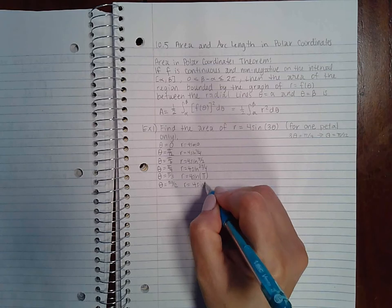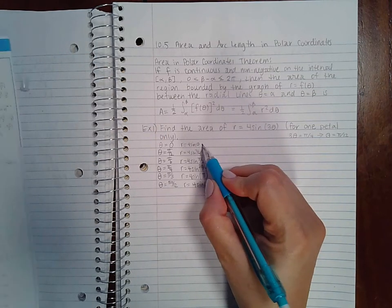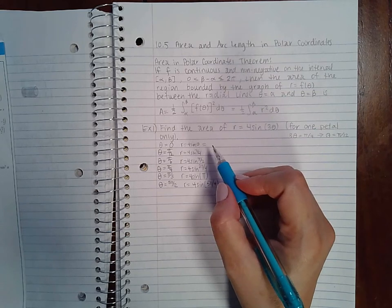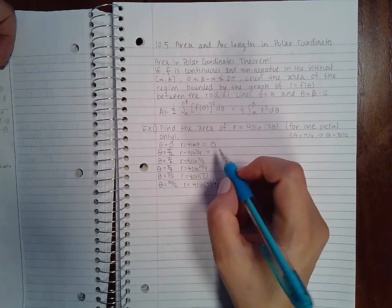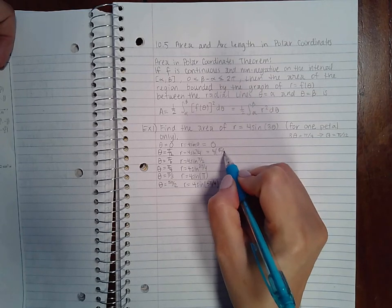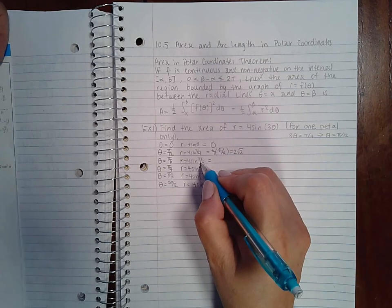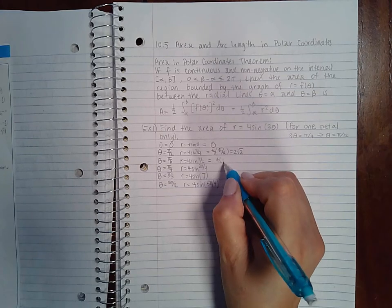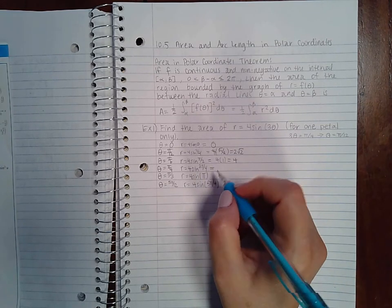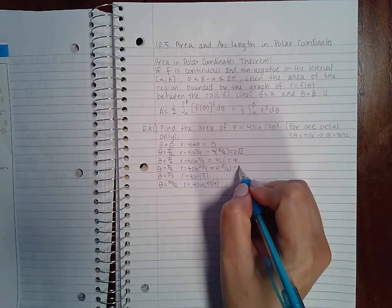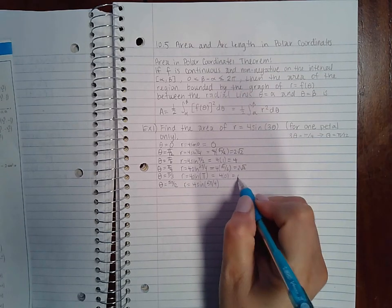That would be 5π/4. So sin(0) is 0, so this is going to be zero. Then sin(π/4) is √2/2, but this 2 will reduce with this leaving me with just 2√2. Sin(π/2) is going to be 1, so I get 4. Sin(3π/2) is going to be √2/2, and sin(π) is going to be zero.